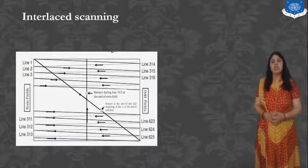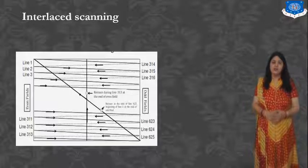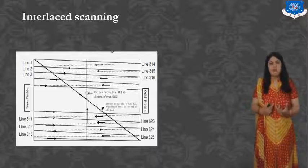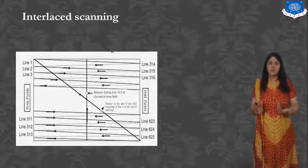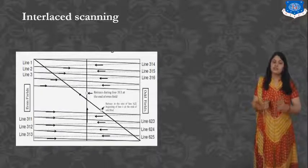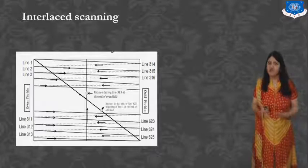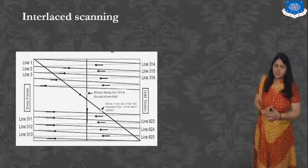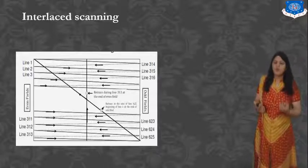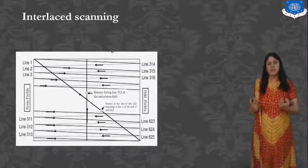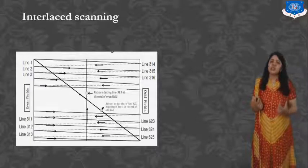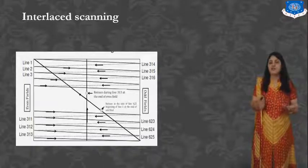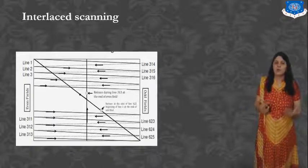In Interlaced Scanning, we divide the frame into fields — odd lines and even lines. Out of 625 lines divided by two, we get 312.5 lines for the odd field and 312.5 for the even field. The two fields — odd and even — are scanned alternately, and each field takes half the time compared to Progressive Scanning.